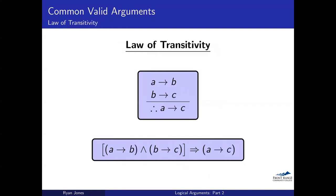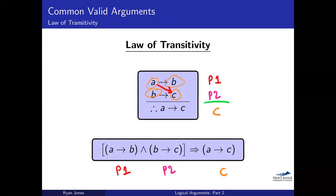Law of transitivity: premise one is 'if A then B,' premise two is 'if B then C,' and these are ANDed together in the compound statement. The conclusion is 'if A then C.' This should make sense — if I've got A then I've got B, and if I've got B then I've got C. You can just cut to the chase and say: if I've got A, I've got C. This is always valid. Do a truth table for this compound statement and you're going to get all truths.